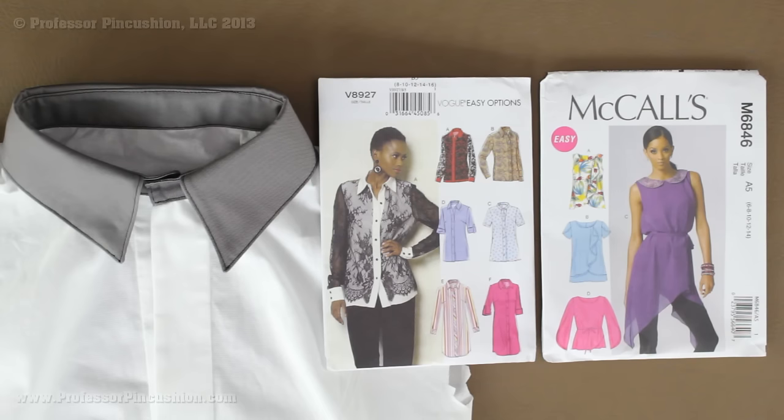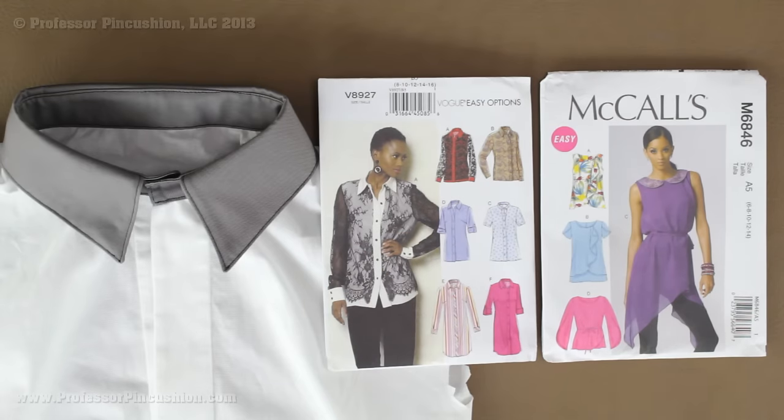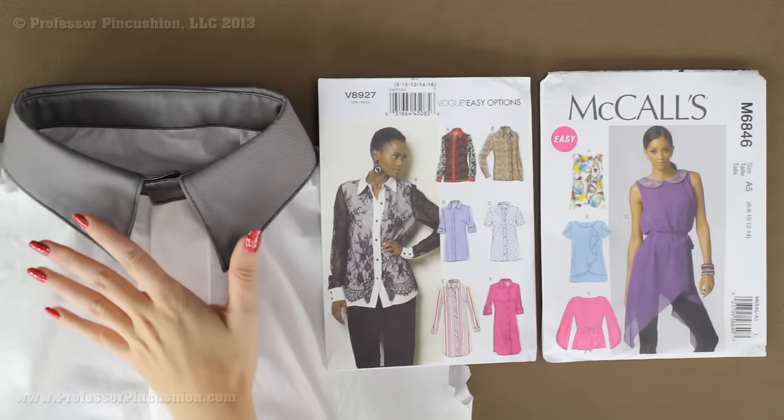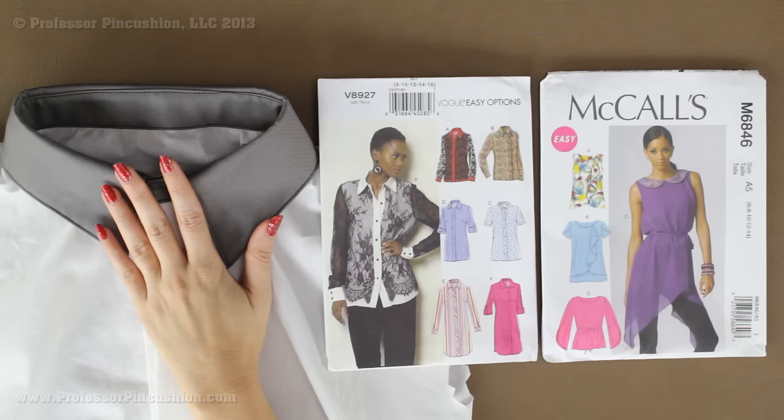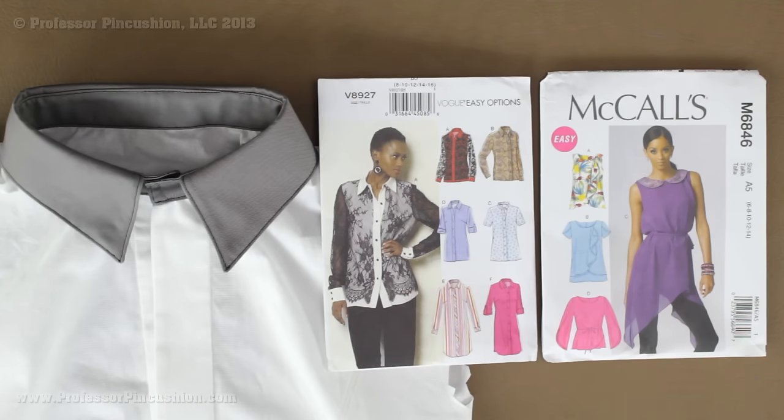Hello and welcome to Professor Pincushion. In this tutorial I'm going to talk about how to sew on a collar. I'm going to be using Vogue 8927 for this demonstration, showing you how to sew a traditional looking collar and also how to attach it to your shirt.